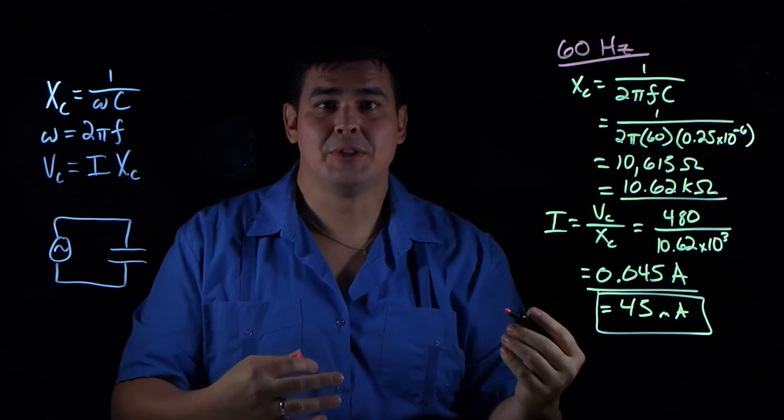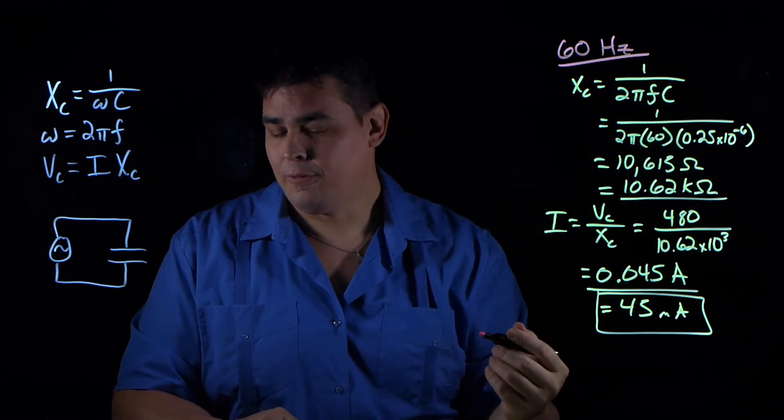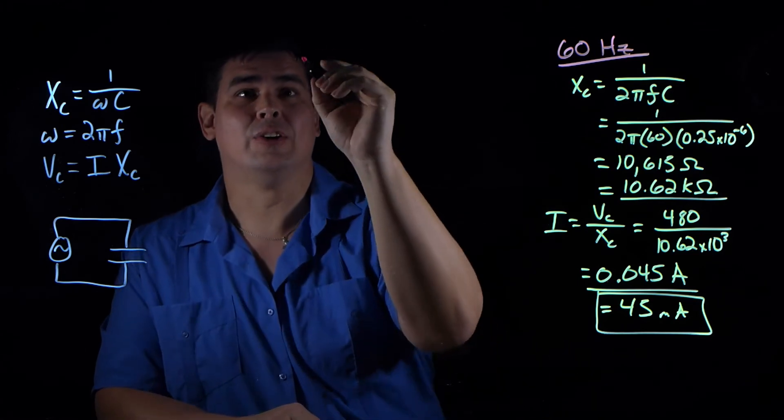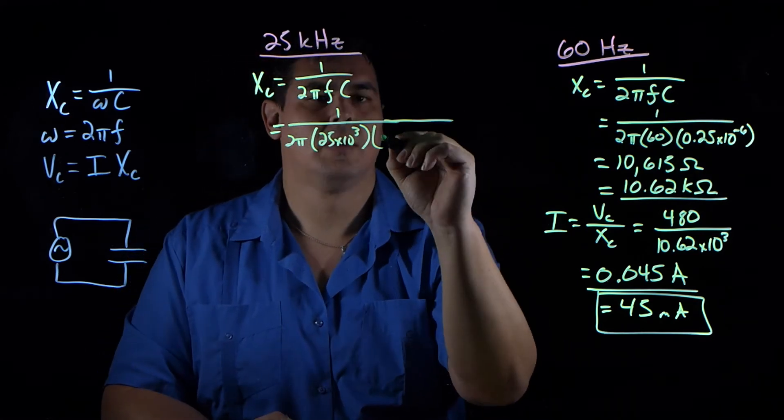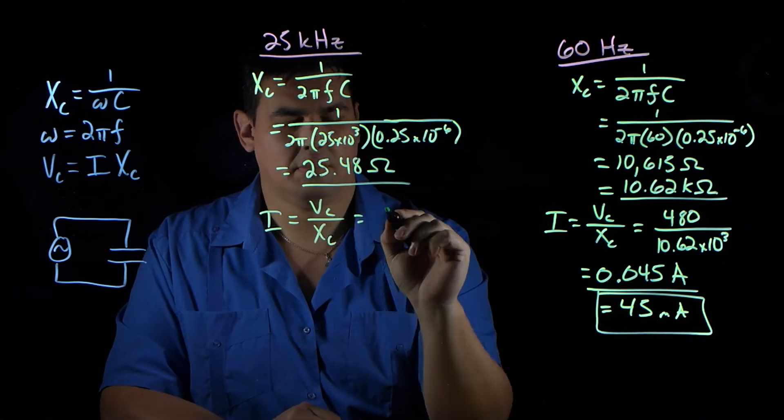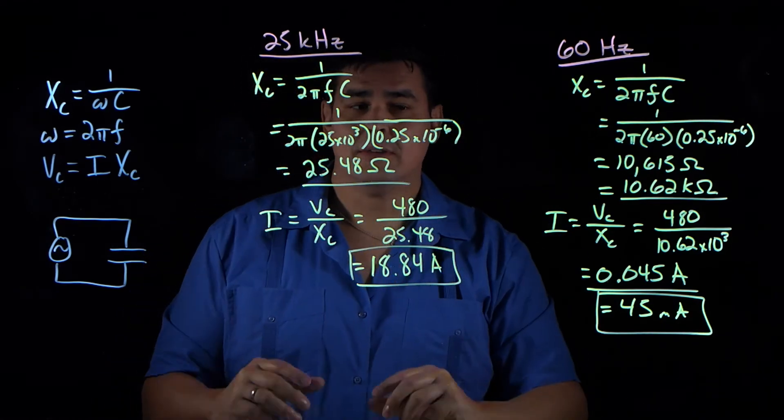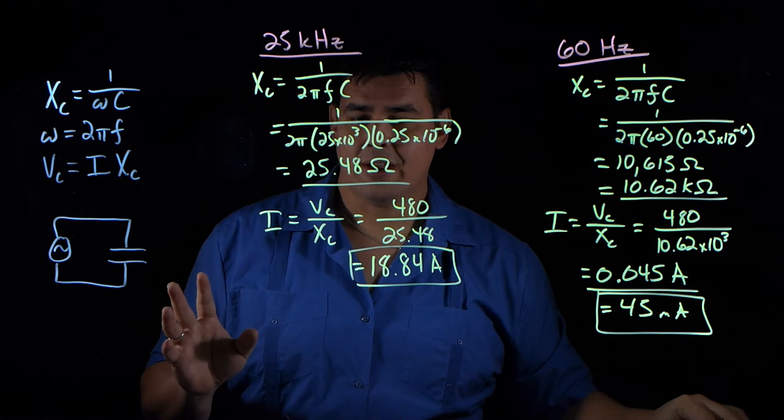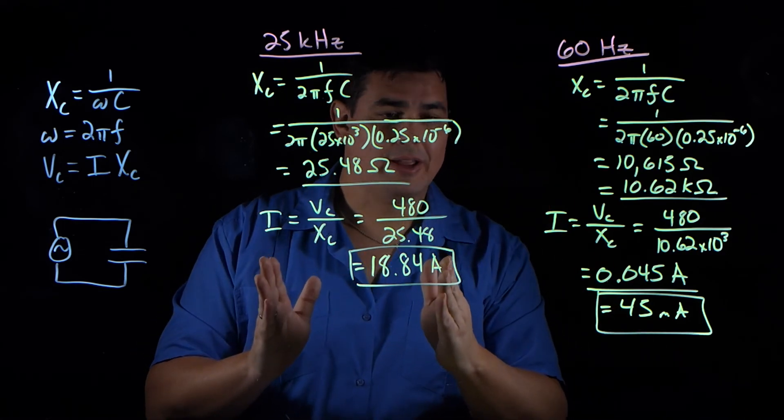Let's do this again, but now let's do it for the other one, which was 25 kilohertz. In this case, I got 18.84 amps.